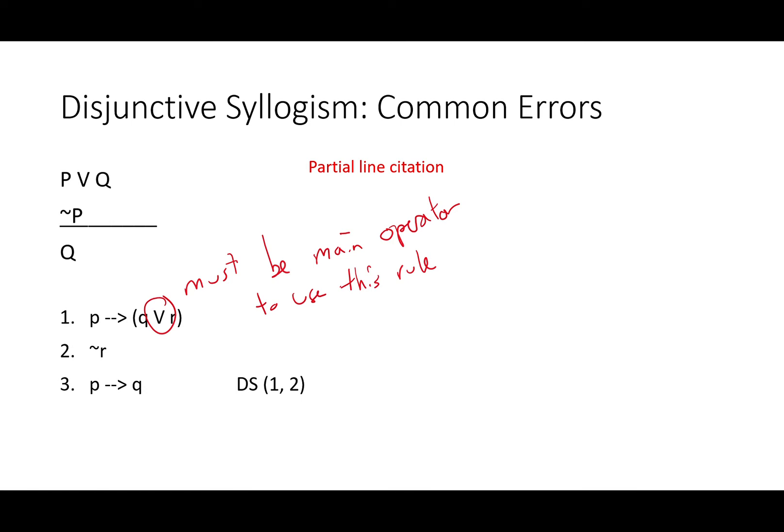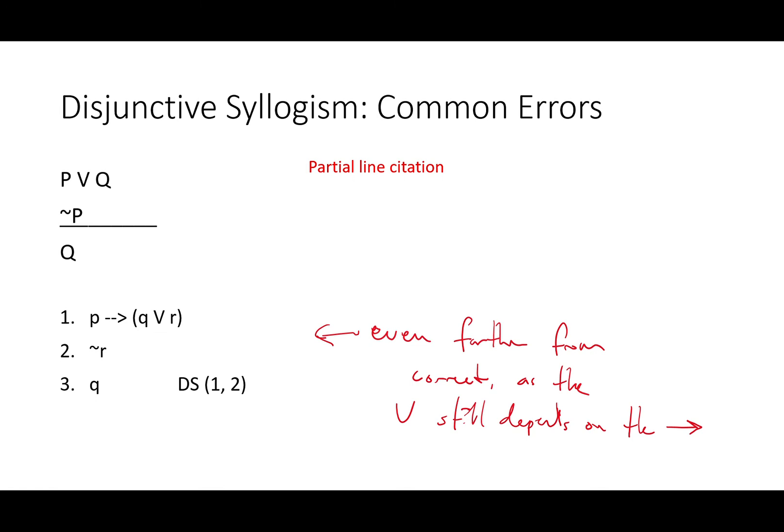You need to have OR as the main operator to use this rule. Something like this would be even farther from correct. If P, then Q or R. Not R. So Q. This disjunction still depends on the conditional. We need to find out whether or not P is true before we can do something like this.